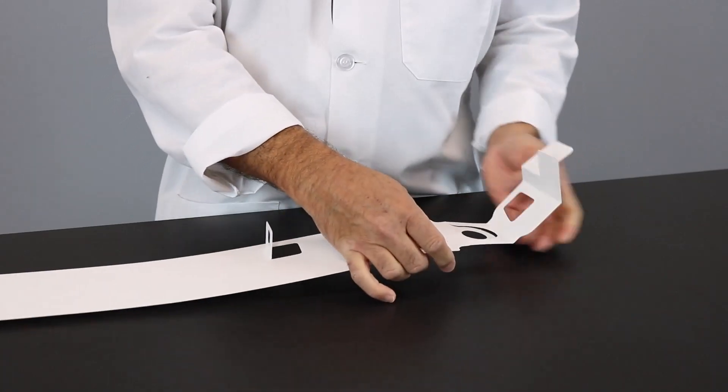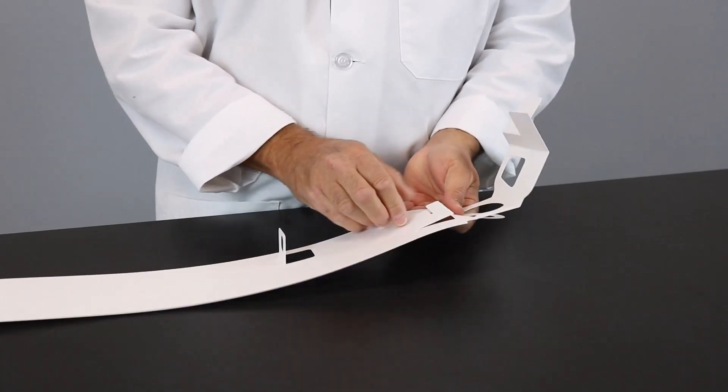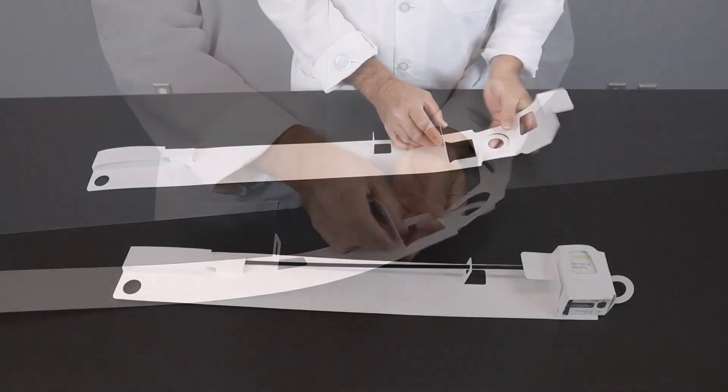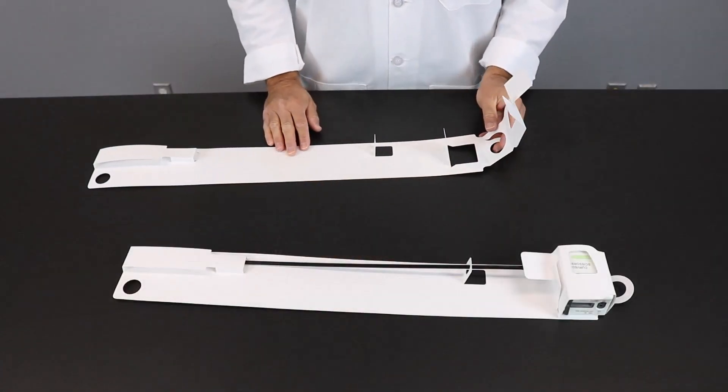Then take the bottom flap here, the last part of the locking tab, fold it down at that score line, make a crease, and now you're ready to insert the instrument.